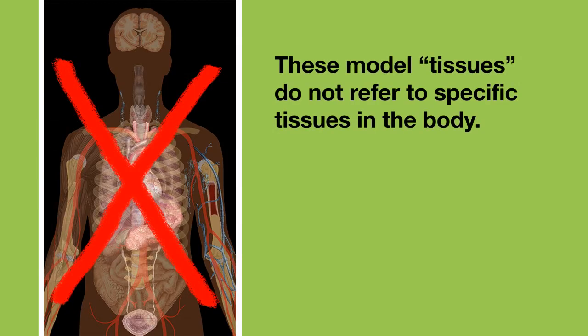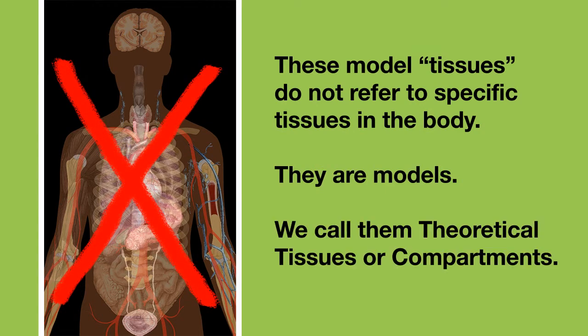These model tissues do not refer to specific tissues in the body. A 60 minute tissue, for example, is not bone or fat or whatever. They are just models. This is why we call them theoretical tissues or compartments.